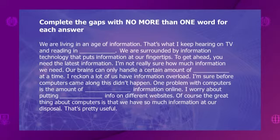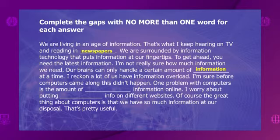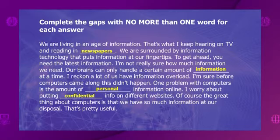Let's check together. We are living in an age of information. That's what I keep hearing on TV and reading in newspapers. We are surrounded by information technology that puts information at our fingertips. To get ahead, you need the latest information. Our brains can only handle a certain amount of information at a time. I reckon a lot of us have information overload. Before computers came along this didn't happen. One problem with computers is the amount of personal information online. I worry about putting confidential info on different websites. The great thing about computers is that we have so much information at our disposal. That's pretty useful.